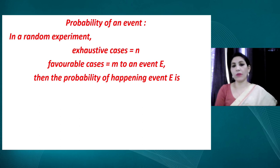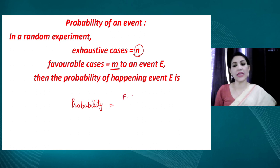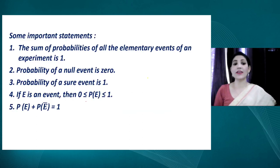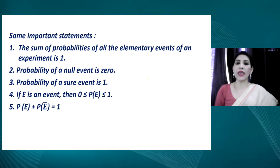Now let us discuss what probability means. The probability of an event is calculated as the number of favorable outcomes m divided by the total number of exhaustive outcomes n. So the probability equals m upon n.